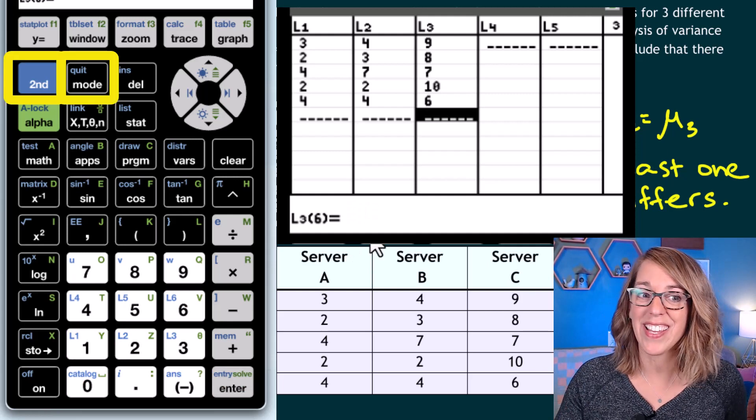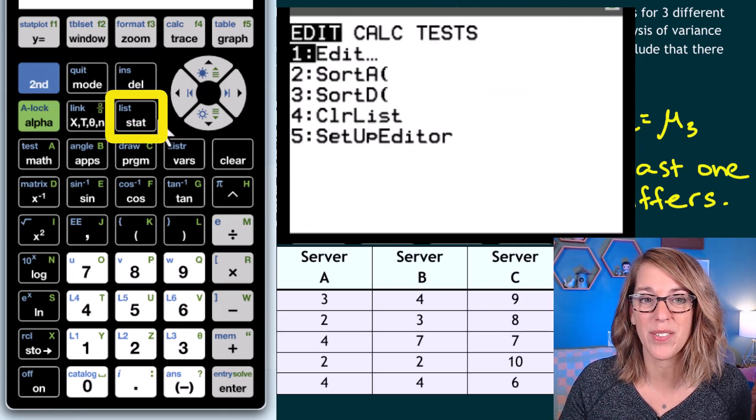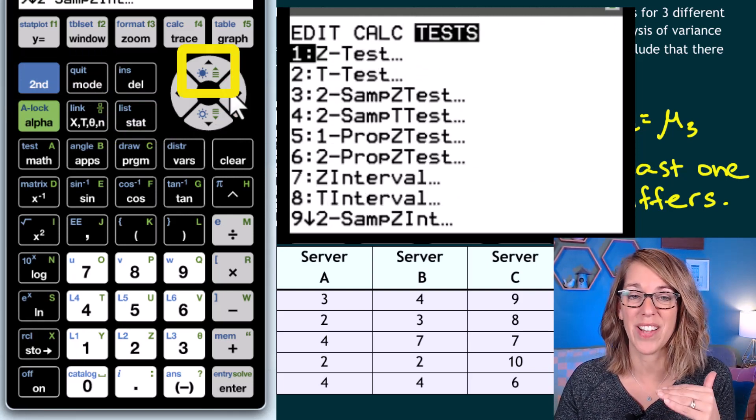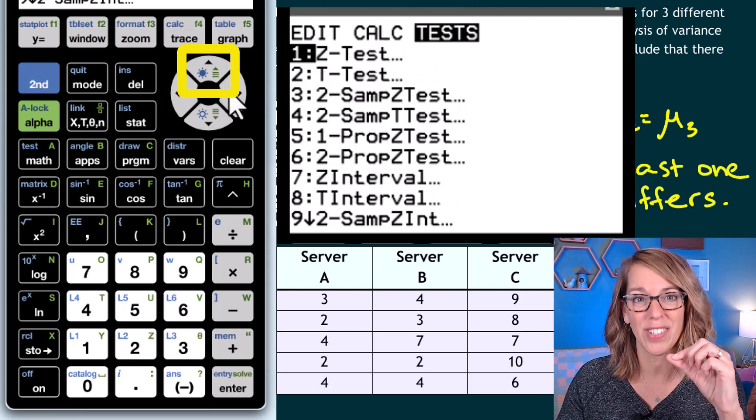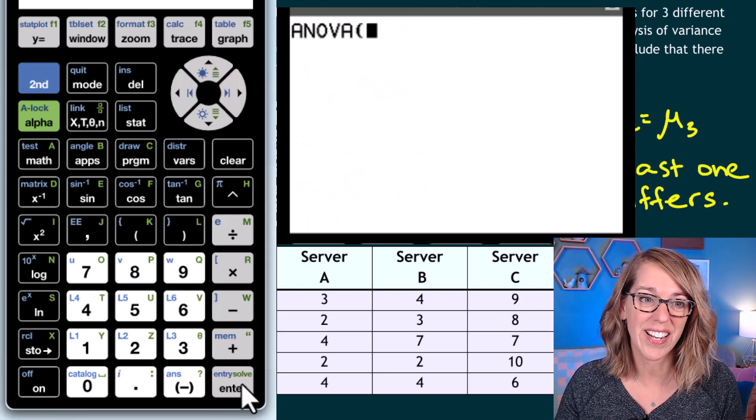Once I've got my data in, I want to quit. So I hit second and quit. I go back to my stat menu. This time I want to run a test. So I arrow over to tests. It's the very last option in the test menu. So let's arrow up to grab ANOVA and then enter to select that.